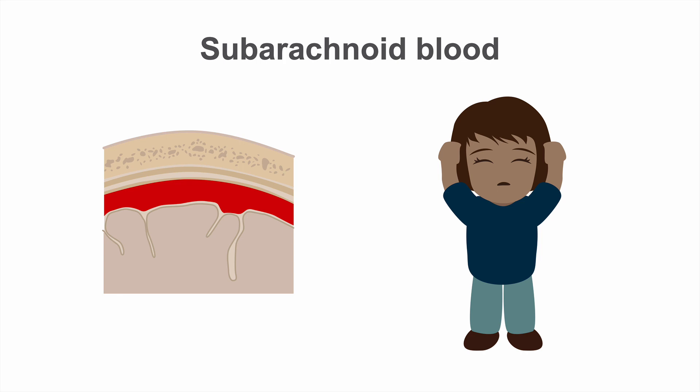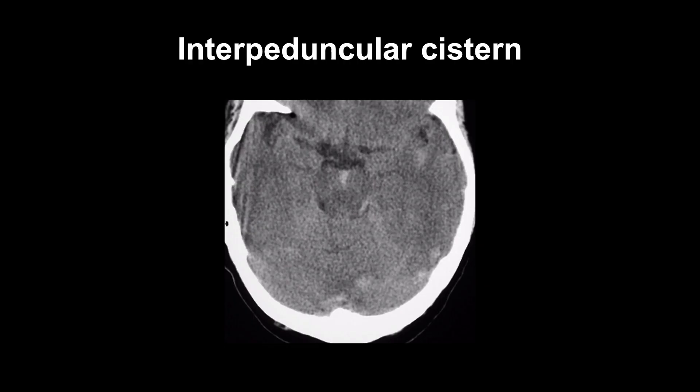When subarachnoid hemorrhage is suspected as the cause of headaches, a good place to begin your search on CT is the interpeduncular cistern. This space is at the level of the midbrain and, as its name indicates, it lies between the two cerebral peduncles. This space is normally filled with low attenuation cerebrospinal fluid, so when the triangular cistern is visible because it's white, that means it's filled with blood.